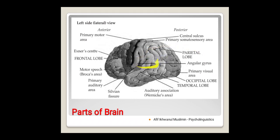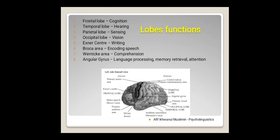We have temporal lobe here, occipital lobe here, and parietal lobe here, and the angular gyrus is here. Each part of the lobe has different functions. Frontal lobe functions relate to cognition, temporal lobe relates to hearing, the functions of parietal lobe relate to sensing, touching. Occipital lobe functions in visions. Exner center works relate to writing. Broca's area, as I have mentioned before, relates to the production of language or encoding speech. Wernicke's area relates to the works of comprehending the input, and the last one, angular gyrus, relates to language processing, memory retrieval, and attention.